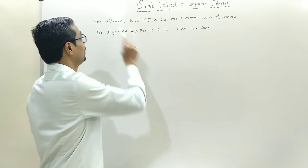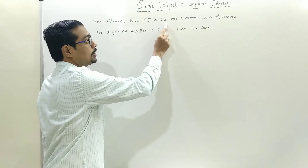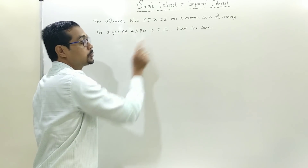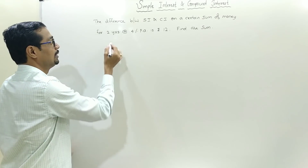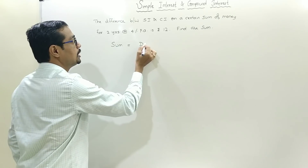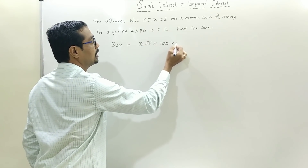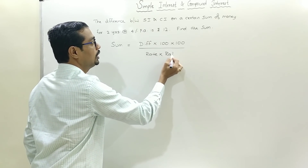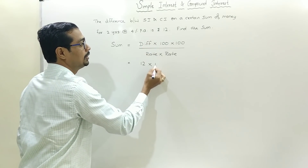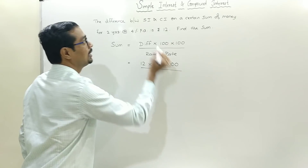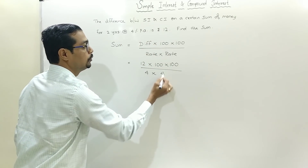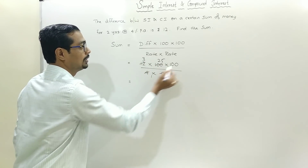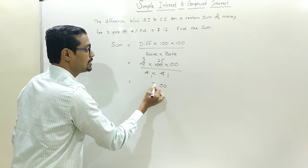Again, moving with the same example. The difference between simple interest and compound interest on a certain sum of money for 2 years at 4% is 12. Find the sum. The sum equals difference into 100 squared, divided by rate squared. That is 12 into 10000 divided by 16. Working through: 4 ones are 4, cancel, 25 threes are 75. The sum is 7500.